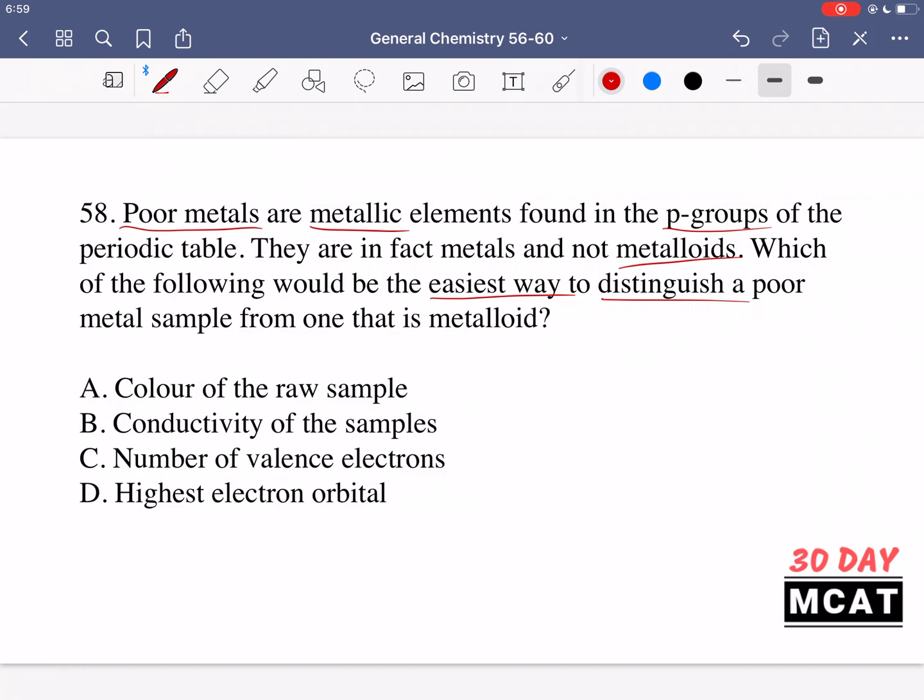Option A says color of the raw sample. That's not one way to distinguish them because if they're found in similar groups, their color is probably going to be similar, so you can't differentiate them by this visual aspect.